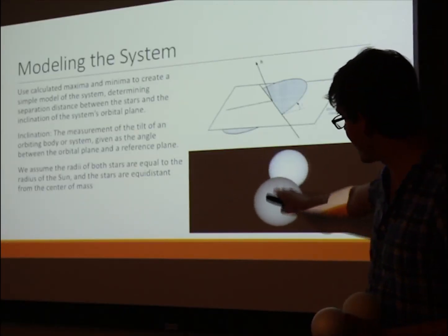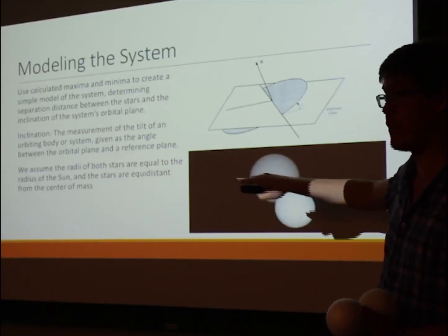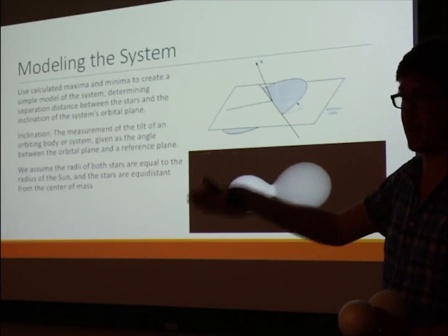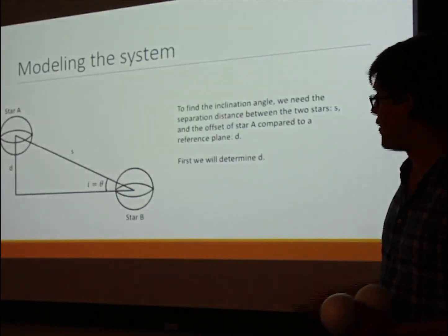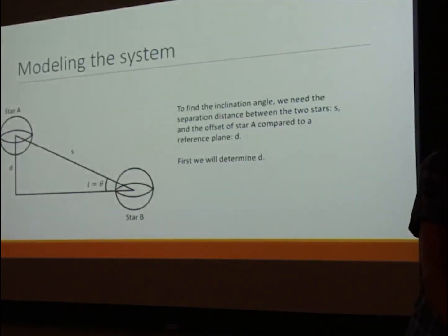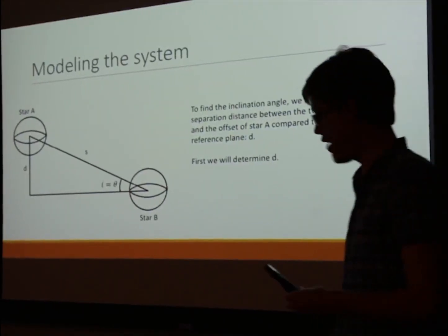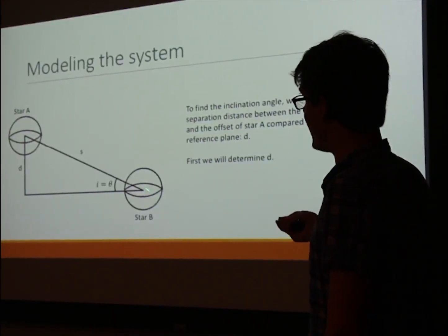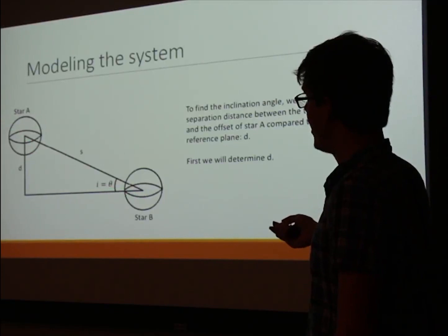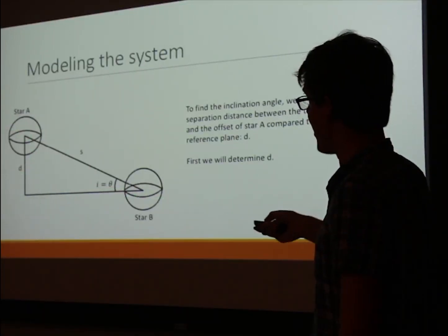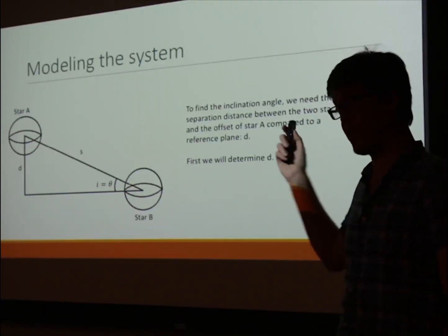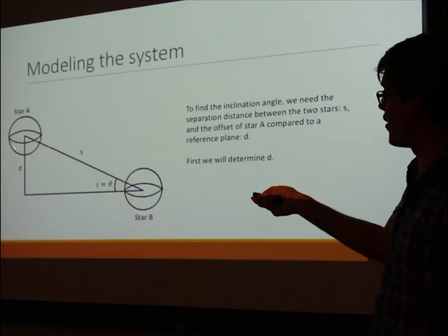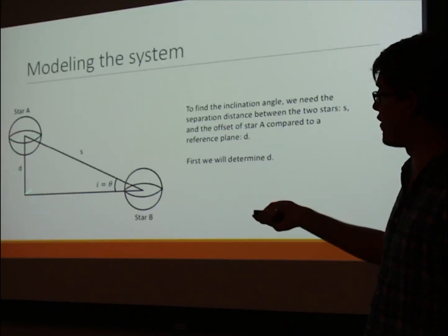Here we see an animation of some arbitrary binary star system. As this star eclipses that one, you can see because of the inclination, some of the light from the rear star still reaches us. Now I want to create a simple model to find the inclination angle based off of two parameters: the total separation distance between the centers of the stars, and some offset from a reference angle. First I will discuss how I determine the value for this d, this distance of offset.